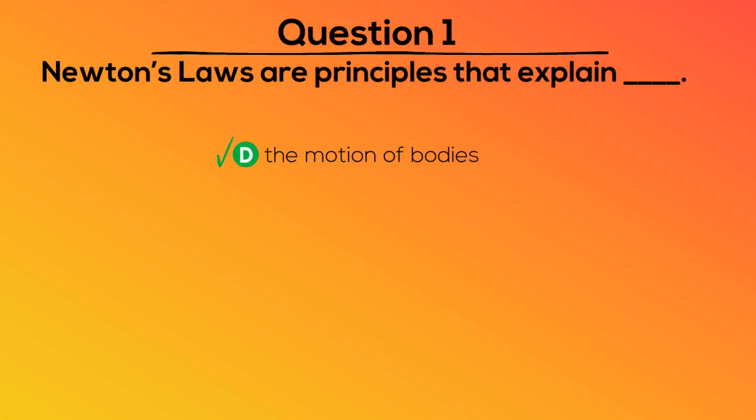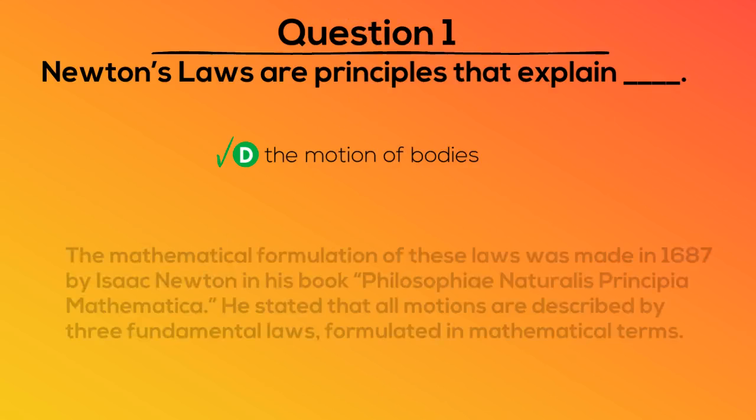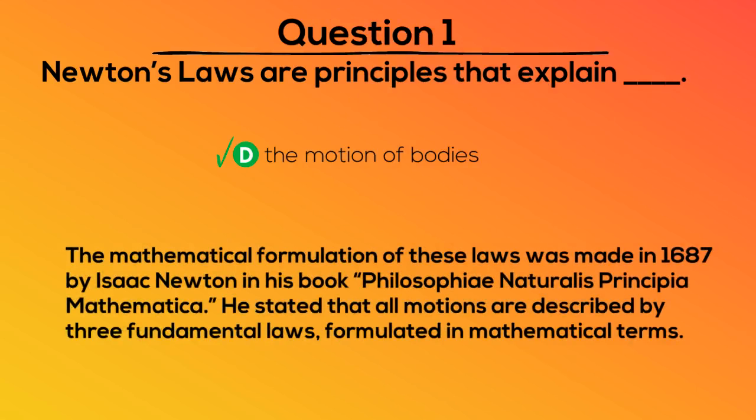The correct answer is D, the motion of bodies. The mathematical formulation of these laws was made in 1687 by Isaac Newton in his book Philosophiae Naturalis Principia Mathematica. He stated that all motions are described by three fundamental laws formulated in mathematical terms.